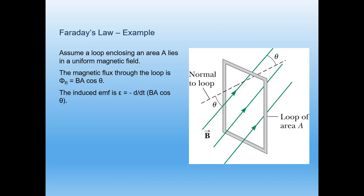Assume a loop enclosing an area A lies in a uniform magnetic field. This is our loop — the normal to the loop makes an angle theta with the magnetic field. The magnetic flux through the loop is Φ = B × A × cosθ.